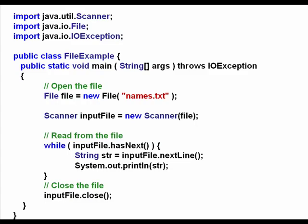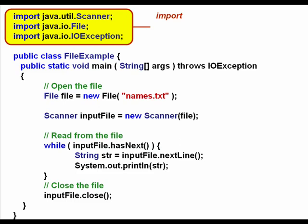The first thing you need to do is, along with importing the Scanner class that we typically use, you also need to import the java.io.File and java.io.Exception classes as well. Also in your main header you'll need to add the words throws IOException.